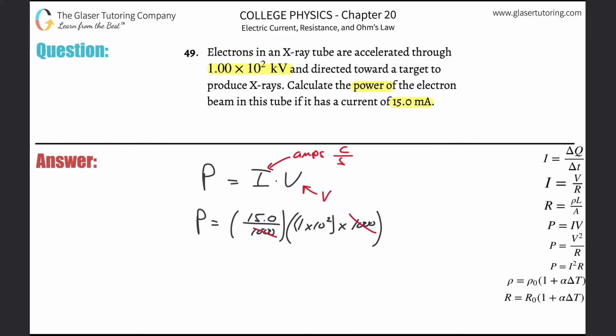Notice the thousands will cancel. Basically it's just the multiplication because the kilo and the milli essentially cancel. If you think about it, that makes sense. So 15 times 100. This works out to be 1.50 times 10 to the 3 watts.